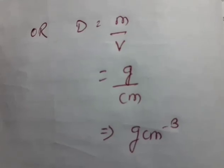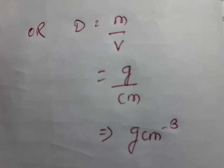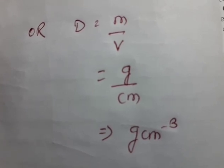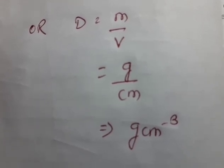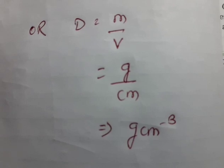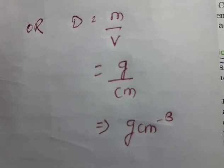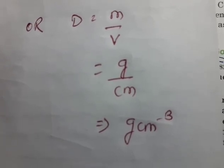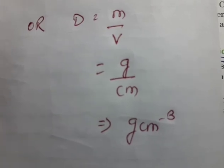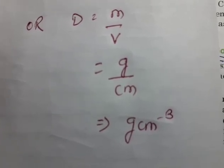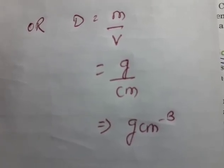Density is again mass by volume. If you take the unit of mass in grams and volume in centimeters, the unit becomes gram per centimeter cube.